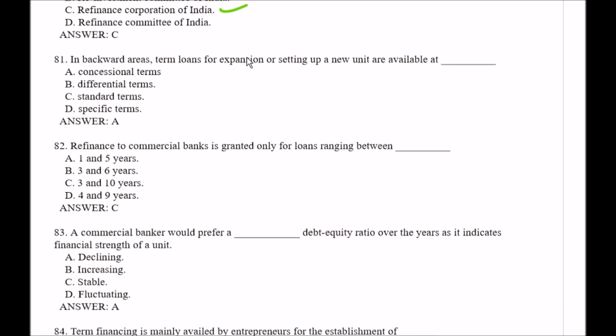Question number 81: In backward areas, term loans for expansion or setting up new units are available at — Option A, concessional terms; Option B, differential terms; Option C, standard terms; Option D, specific terms. The right answer is Option A, concessional terms.